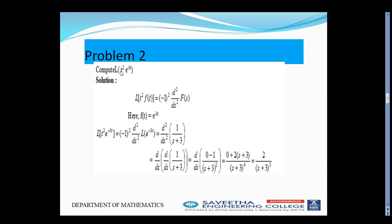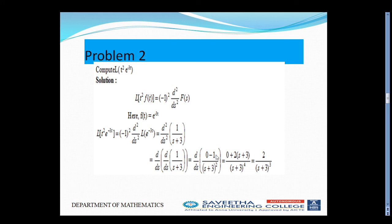Problem 2: Compute L of t²·e^(-3t). Since t² is present, we use the general formula: L of t²·f(T) equals (-1)² times d²/dS² of capital F(S). Here f(T) is e^(-3t), so L of e^(-3t) equals 1/(S+3). Differentiating once gives minus 1/(S+3)². Differentiating again gives 2/(S+3)³.